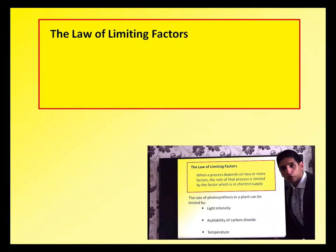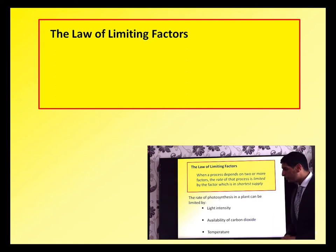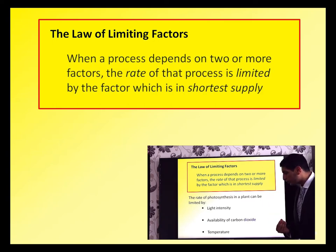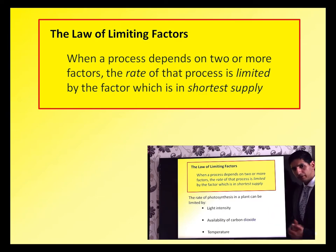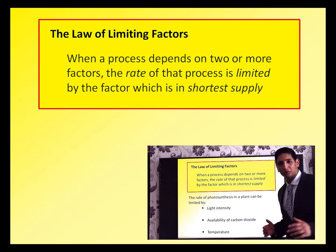In your exams they ask you all the time: what factors affect the rate of photosynthesis? There are three — light intensity, availability of carbon dioxide, and temperature. Today we're going to be looking at all of them. What is a limiting factor? When a process depends on two or more factors, the rate of that process is limited by the factor which is in shorter supply.